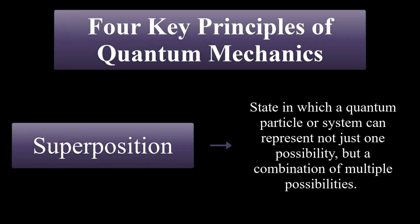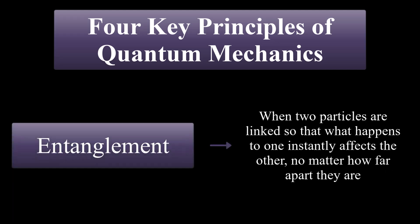Superposition is the state in which a quantum particle or system can represent not just one possibility, but a combination of multiple possibilities. Entanglement is the process in which multiple quantum particles become correlated more strongly than regular probability allows, even if they are apart in distance.